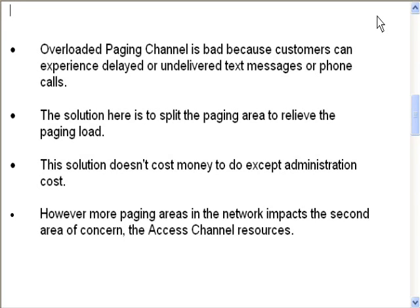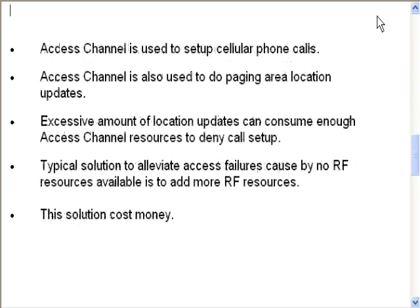However, more paging areas in the network impacts the second area of concern, and that is the access channel resources. The access channel is used to set up cellular phone calls and also to do paging area location updates. Excessive location updates can consume enough access channel resources to deny call setup.